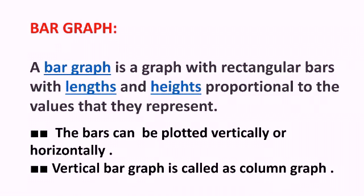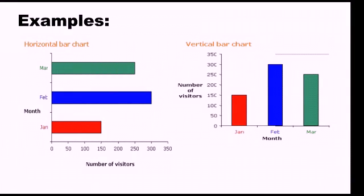Vertical bar graph is also called a column graph. Now look at the examples. Here I have given one example — the first one is a horizontal bar graph. The values we are comparing from the horizontal lines; the green, blue, and red lines indicate the values. These horizontal lines show that blue is maximum, meaning in February the number of visitors is maximum. In the next example there is a vertical bar graph — the lines are standing, so it is vertical.